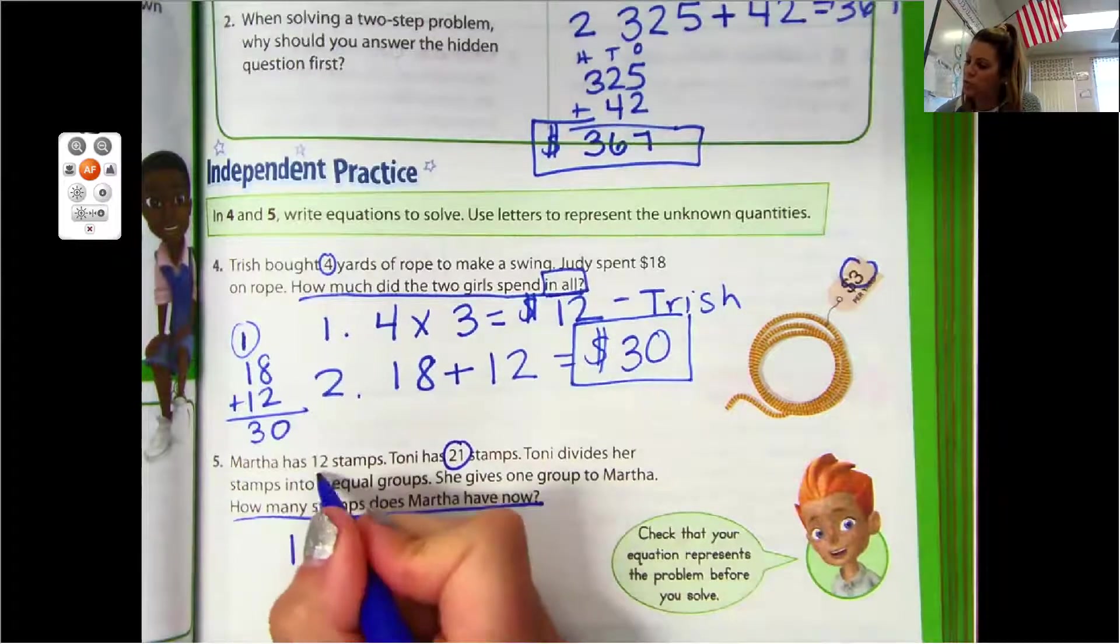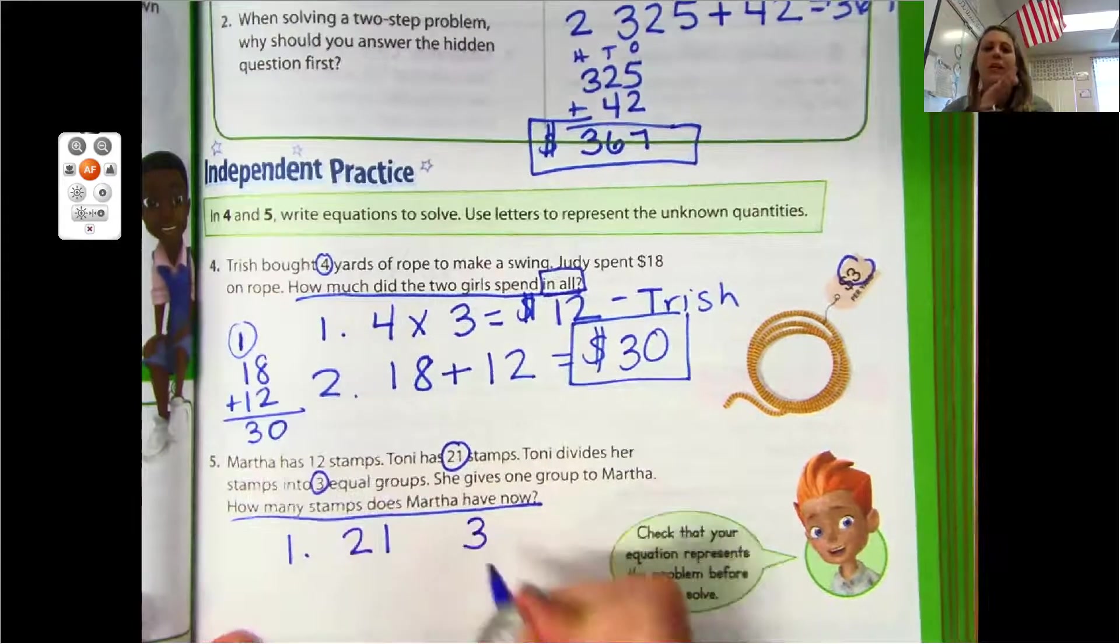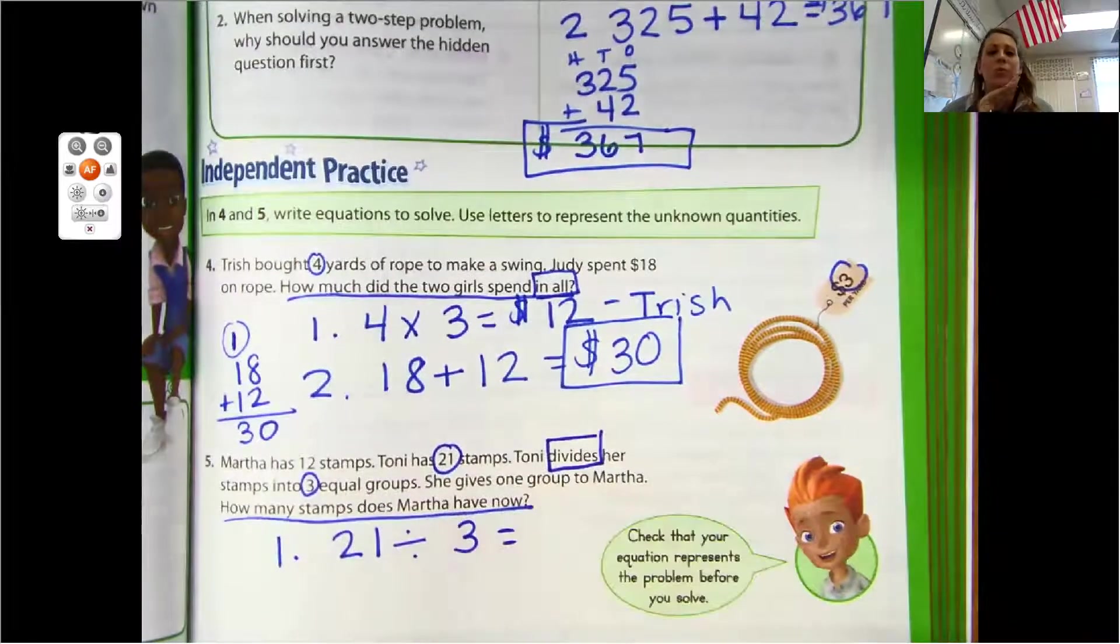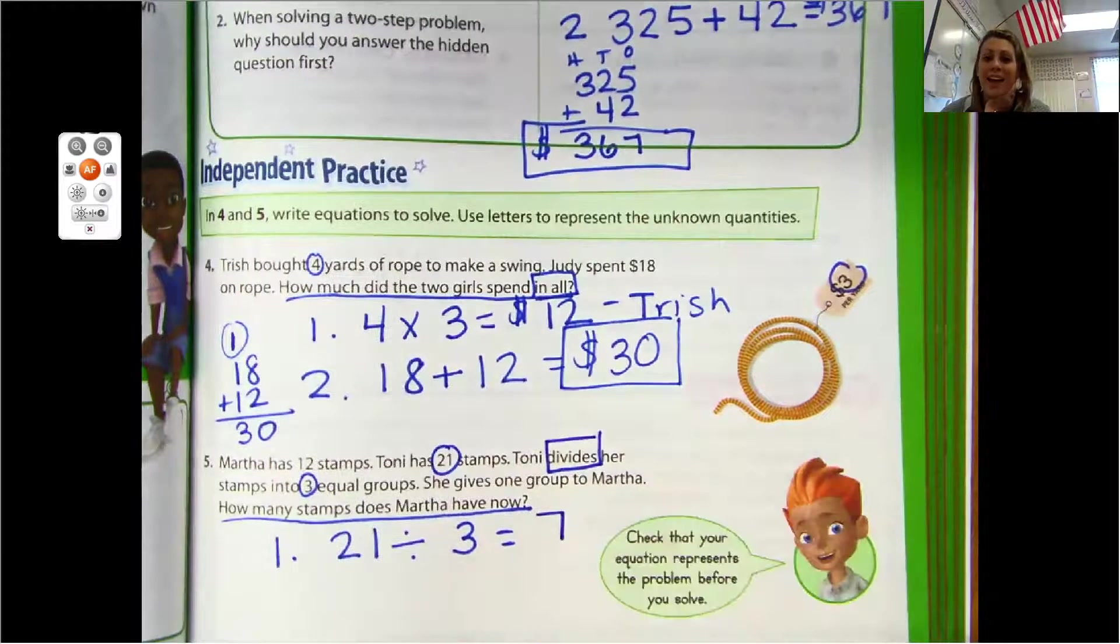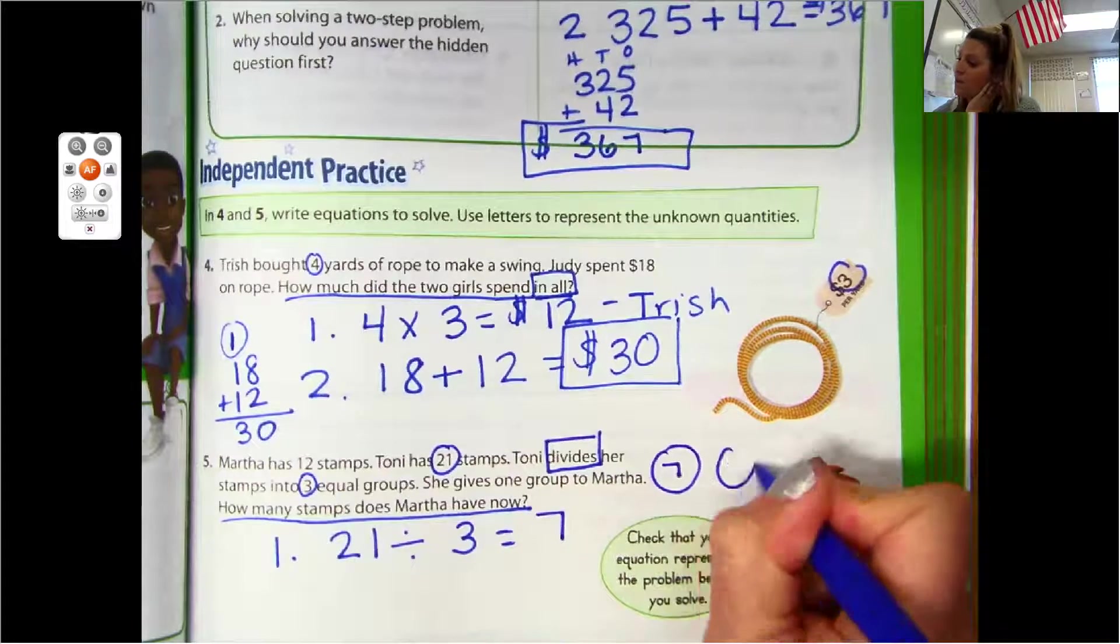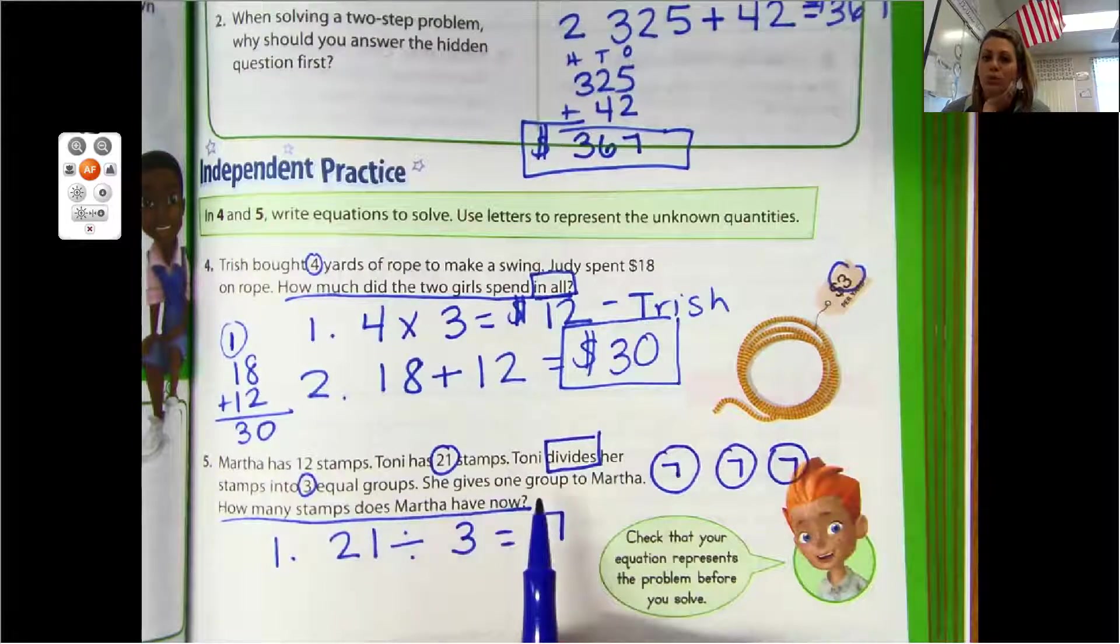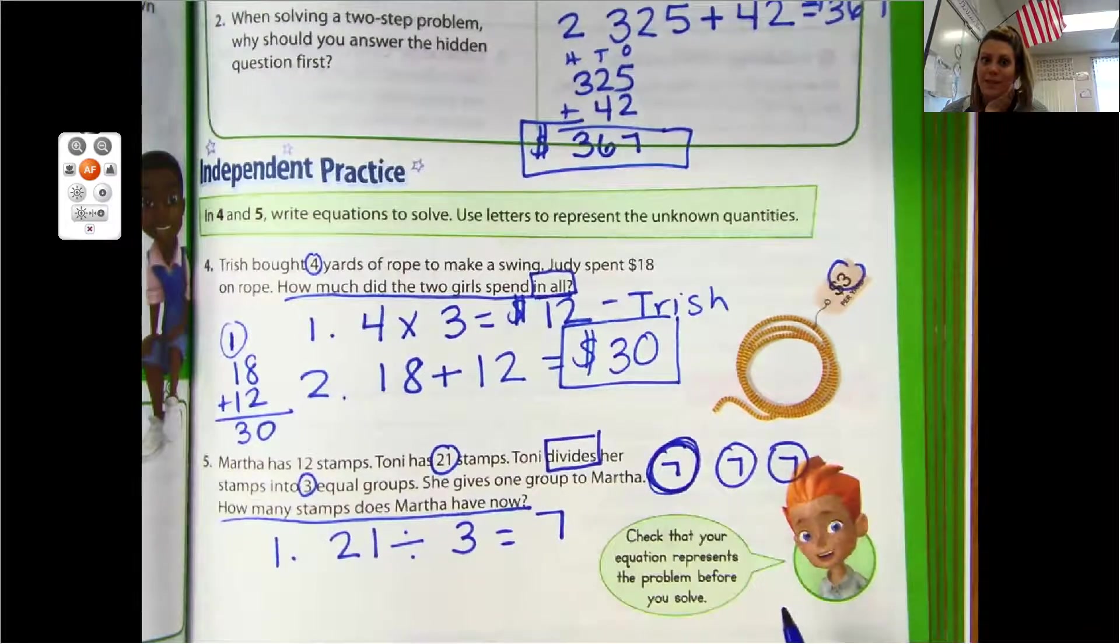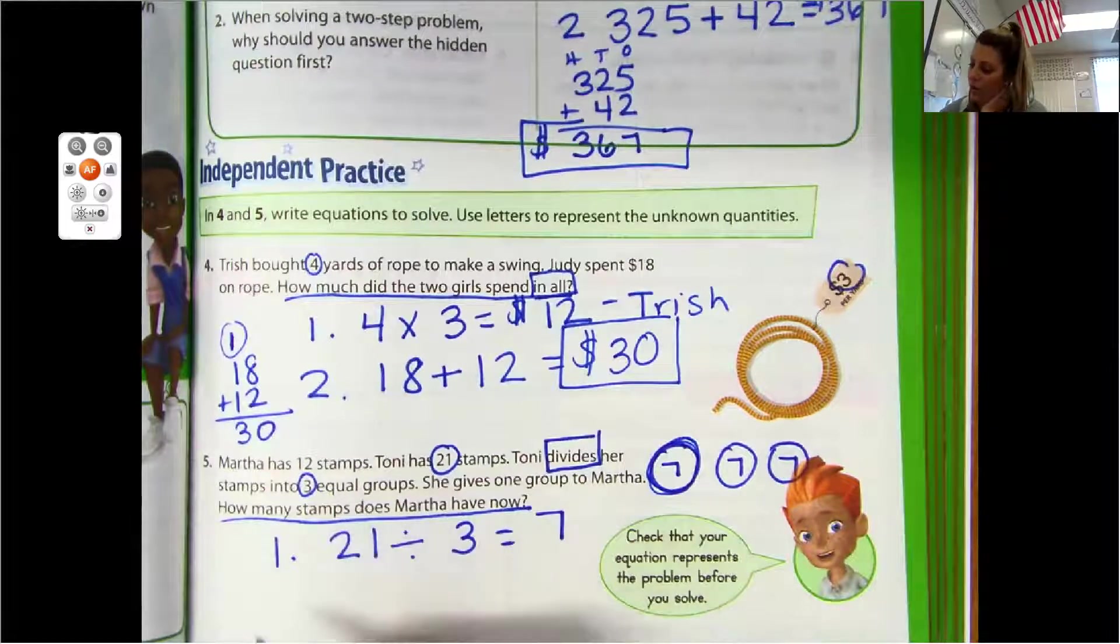We need to figure out that first step. Tony had 21 stamps, and she divides her stamps into three equal groups. What's the keyword? We've got 21 and three. We're dividing. 21 divided by three equals seven. So Tony has seven stamps in each group - this group has seven, this group has seven, and this group has seven. Then she gives one group to Martha. How many are in one group? Seven. So she gave Martha seven of her stamps.